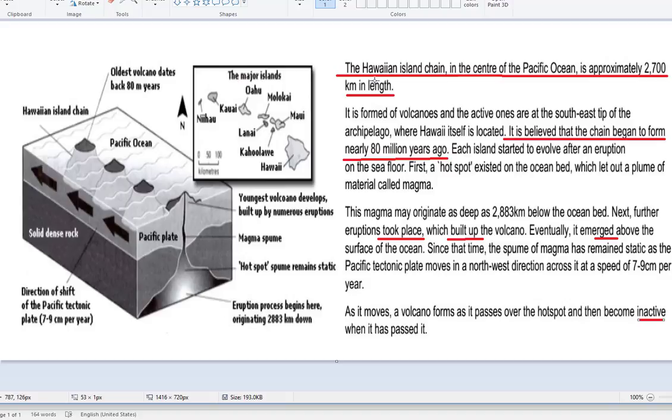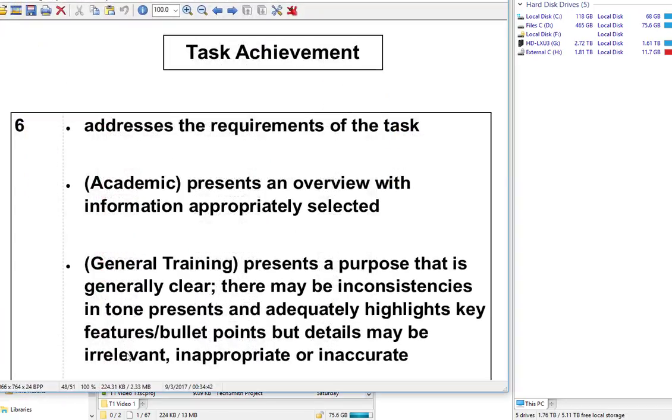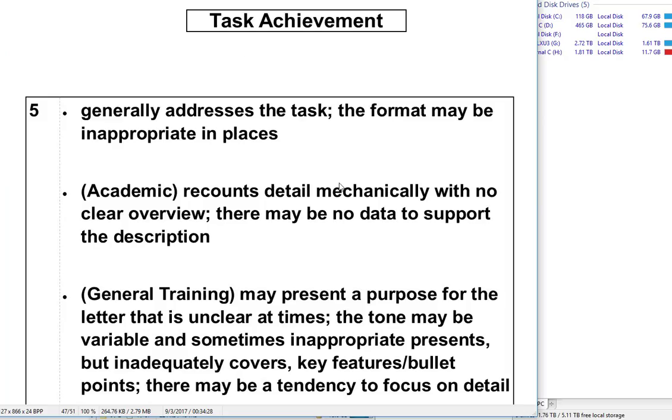So we have a problem with the overview. We have some claims made here, which is just not supported by what I see in the illustration. So, task achievement for this presents an overview with information appropriately selected. No, it cannot be that. No data to describe the description. It's got to be a 5 for task achievement because of those problems.